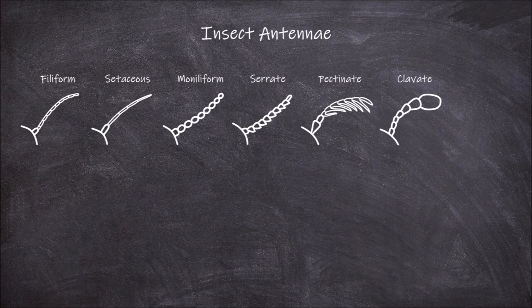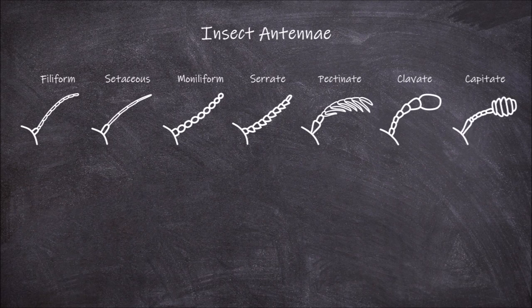In clavate antennae, the segments get larger as you move towards the tip, forming a gradual club. Capitate antennae, on the other hand, end in an abrupt club, as the last few segments are enlarged.